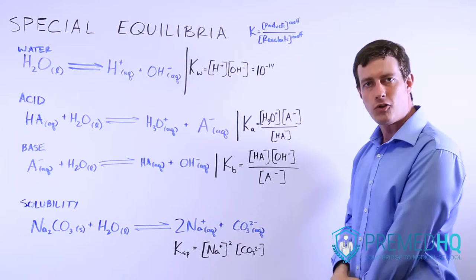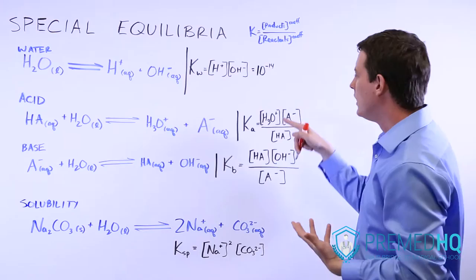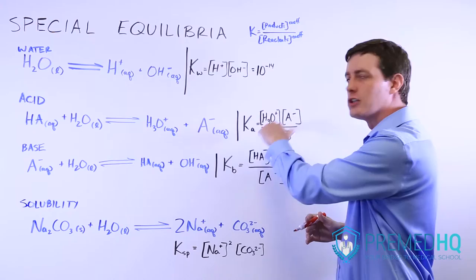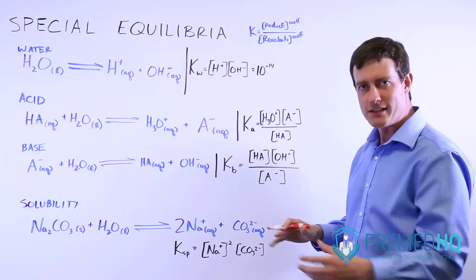A good acid is one that dissociates frequently into protons and its conjugate base. If this is a very good acid, it will have a high Ka because the product concentrations will be high relative to the reactant concentration. If it's a weaker acid, it will have a much lower Ka value. So a high Ka represents a very strong acid. Later on, when we get to pKa, we'll find that a low pKa is also a strong acid.